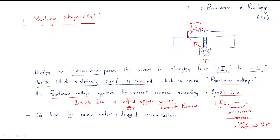The cause is the current reversal, and this effect opposes the cause due to Lenz's law. So it opposes the change from plus IC to minus IC, which will take more time — thereby causing under or delayed commutation.